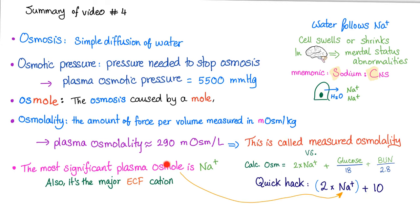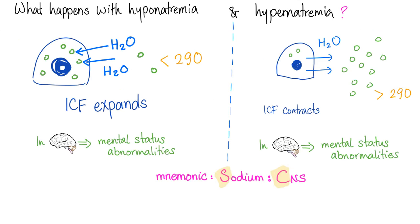The most significant plasma osmol is sodium, which is also the major extracellular fluid cation. Water follows sodium, so cells can swell or shrink due to sodium problems. If the affected cell is in your brain, you'll get mental status abnormalities — mnemonic: sodium CNS.